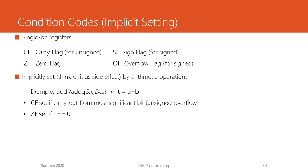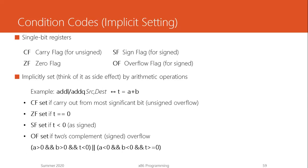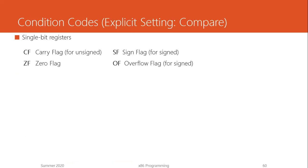If the result is negative, the sign flag SF gets set. If there is a two's complement overflow — the number is larger than fits in the register — the overflow flag is set to caution the user. Be careful of the LEAL instruction used for computing effective addresses: it does not set these condition codes implicitly. I repeat — LEAL does not set these condition codes.